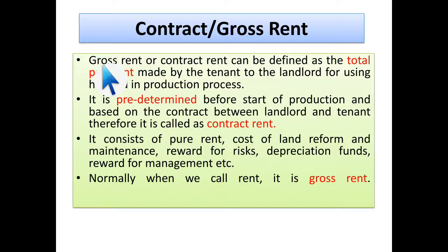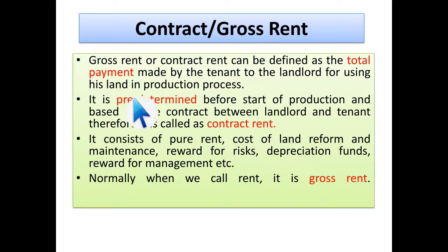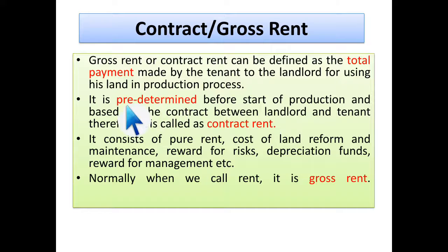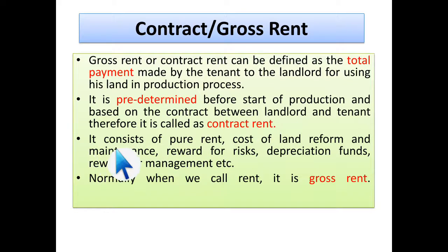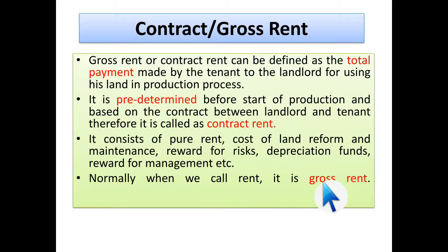Gross rent or contract rent can be defined as the total payment made by the tenant to the landlord for using his land in the production process. It is called contract rent because it is predetermined — based on a contract between the landlord and tenant before the start of production. It consists of pure rent, cost of land reforms and maintenance, reward for risk, depreciation fund, reward for management, etc. Normally when we say 'rent,' that is gross rent.